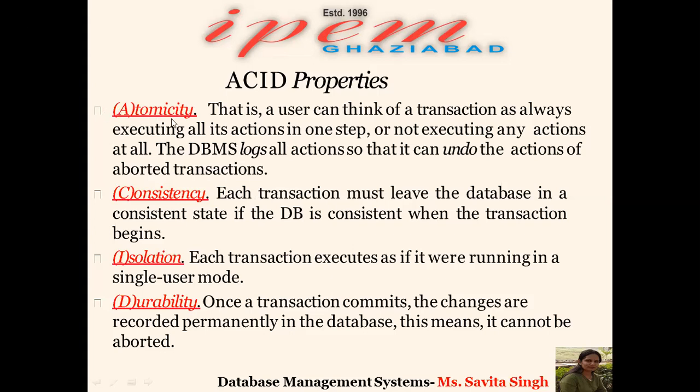The first property is atomicity — either all or none. Either all operations of the transaction should be executed, or none of the operations should be executed. If some operations execute successfully and others do not, this leaves the transaction in an inconsistent state. Atomicity ensures that if some operations fail, the remaining operations are undone, rolling back the entire transaction.